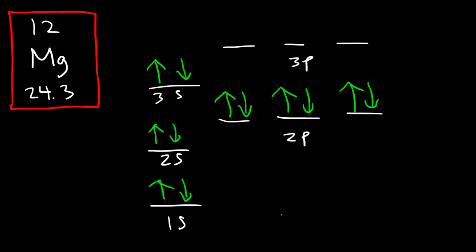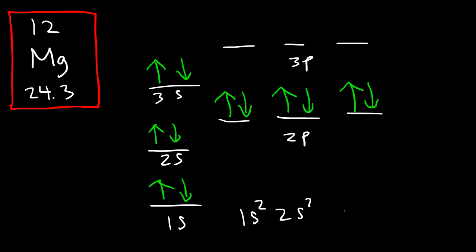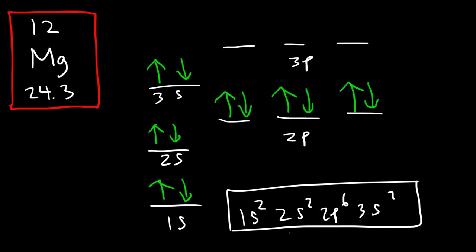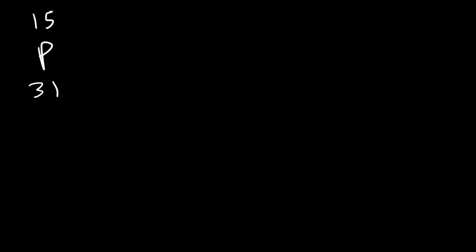If you want to write the electron configuration, you can literally read it off: it's 1s2, 2s2, 2p6, 3s2. But as mentioned, you don't need to write that — you can just fill up the orbital diagram until you reach 12. Now, is magnesium paramagnetic or diamagnetic? Magnesium contains only paired electrons, so magnesium is diamagnetic.